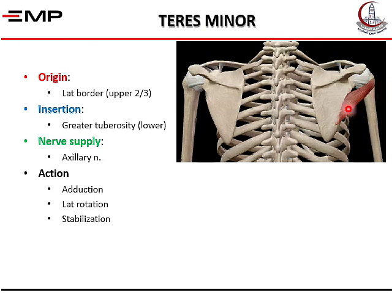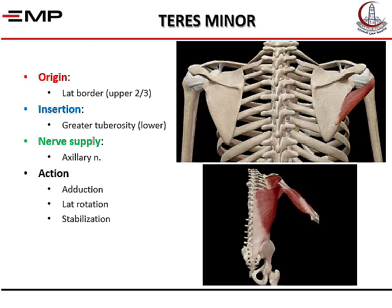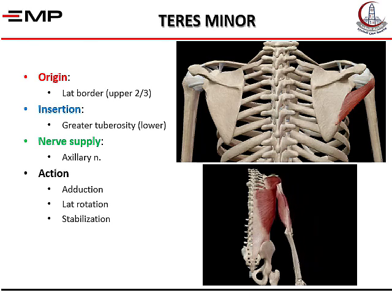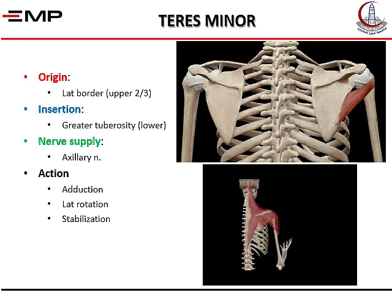The teres minor arises from the upper two-thirds of the lateral border of the scapula and inserts into the lower impression of the greater tuberosity. It is supplied by the axillary nerve, together with the deltoid. Its actions are the same as the infraspinatus: lateral rotation and stabilization of the shoulder.